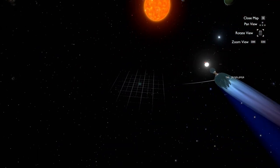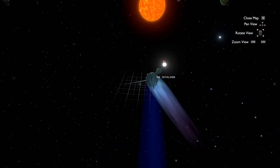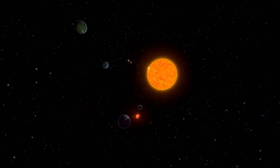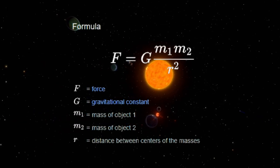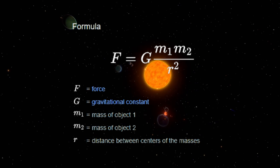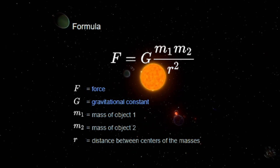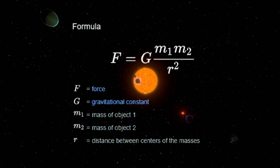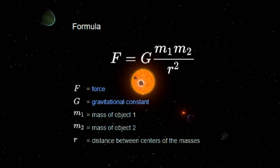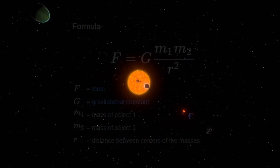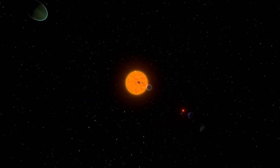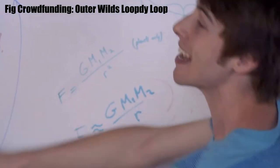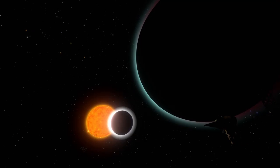The most egregious tweak to physics is a change they've made to Newton's law of universal gravitation. This law states that the gravitational force is proportional to the mass of the two bodies being attracted to each other and inversely proportional to the square of the distance between them. The devs chose to instead change this equation to be proportional to just 1 over r instead of 1 over r squared.